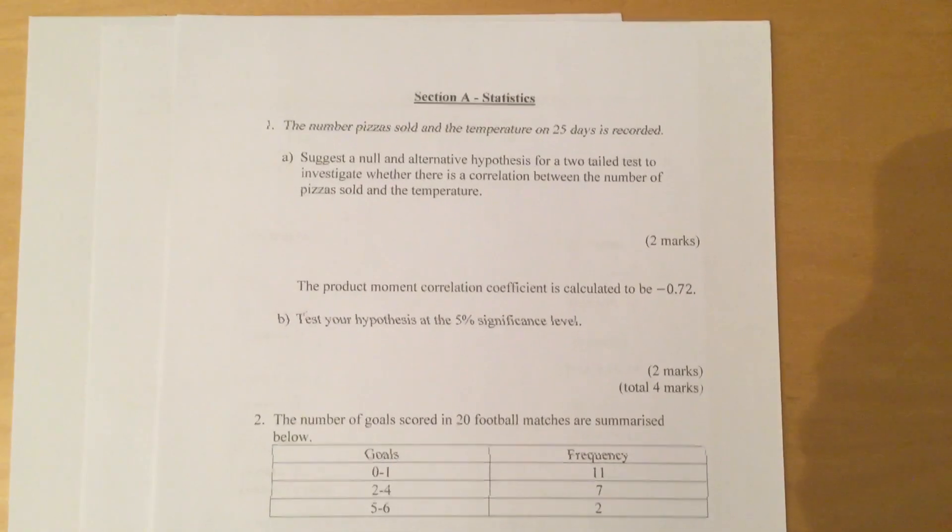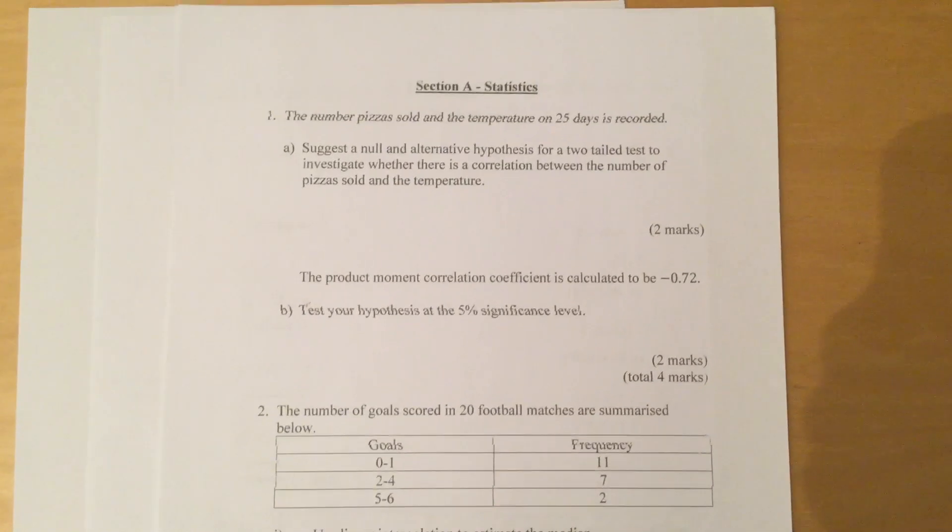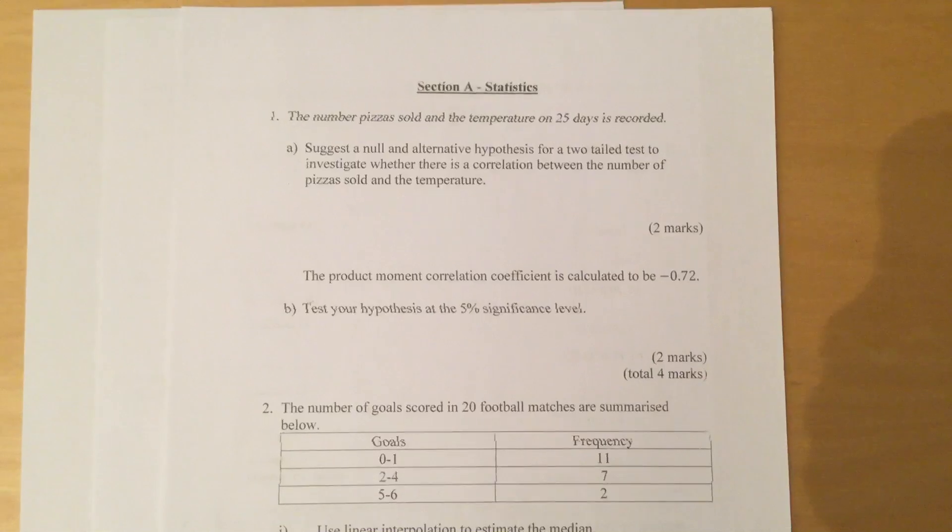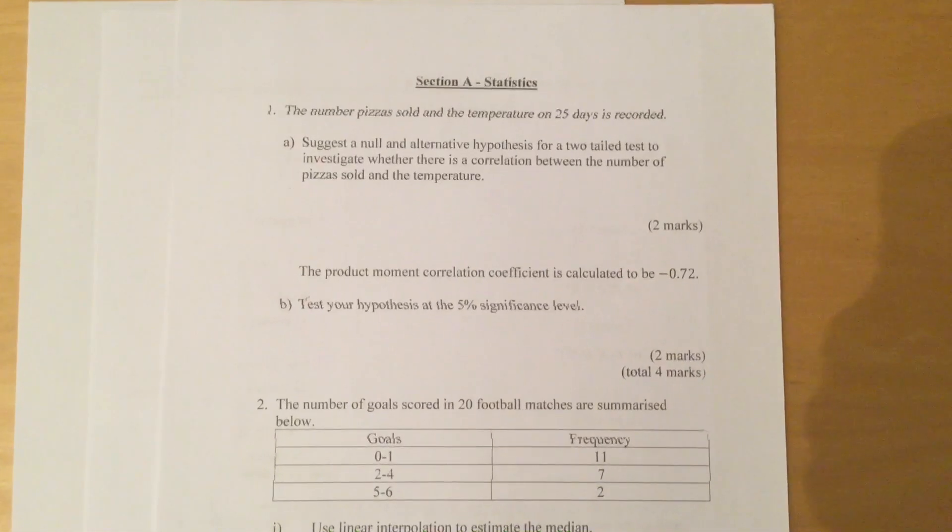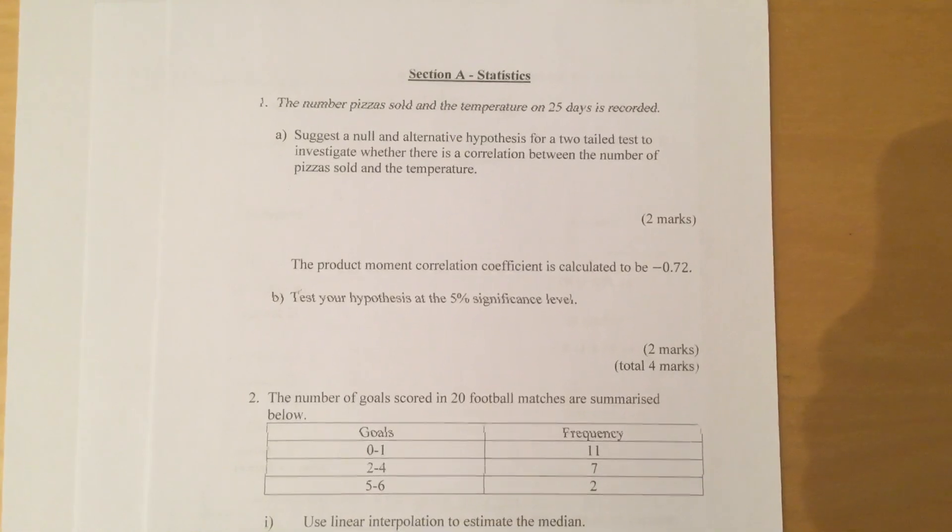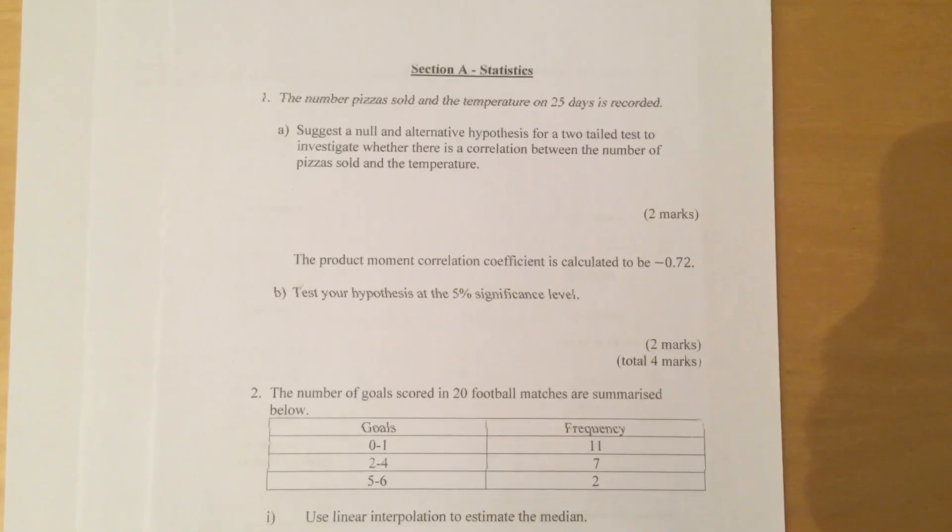Section A, statistics. Question 1: The number of pizzas sold and the temperature on 25 days is recorded. Part A: Suggest null and alternate hypothesis for a two-tailed test to investigate whether there is a correlation between the number of pizzas sold and the temperature.